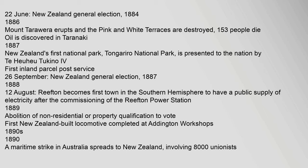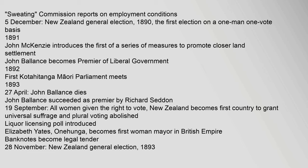1890s. 1890: A maritime strike in Australia spreads to New Zealand, involving 8,000 unionists. 'Sweating' Commission reports on employment conditions. 5 December: New Zealand general election — 1890 — the first election on a one-man one-vote basis. 1891: John Mackenzie introduces the first of a series of measures to promote closer land settlement. John Ballance becomes Premier of Liberal government.